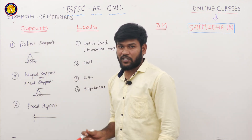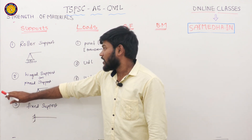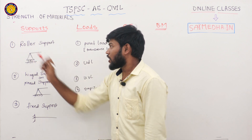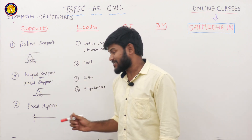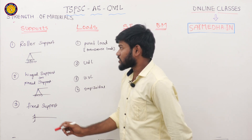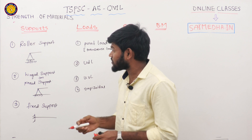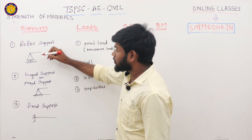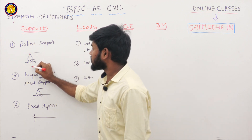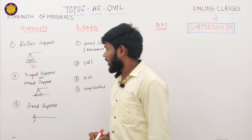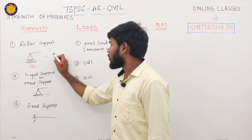Coming to the supports — there are different types of supports. How many types are there? Three types. The first one is roller support, the second is hinged or pinned support, and the third is fixed support. At a roller support, only one reaction is possible: RA.